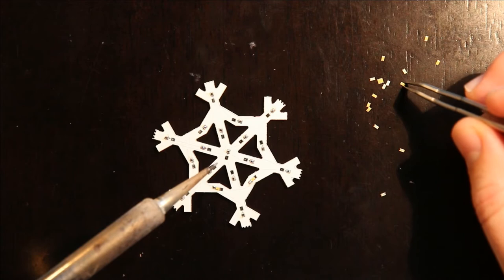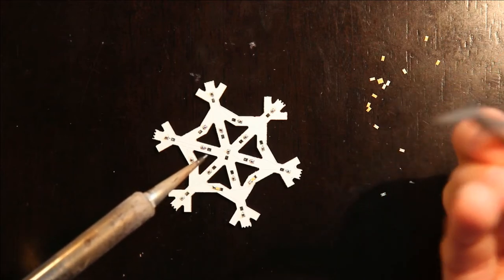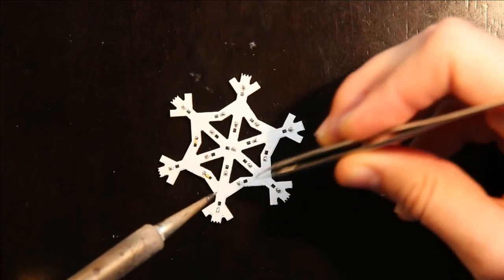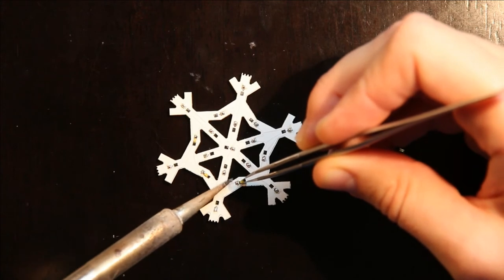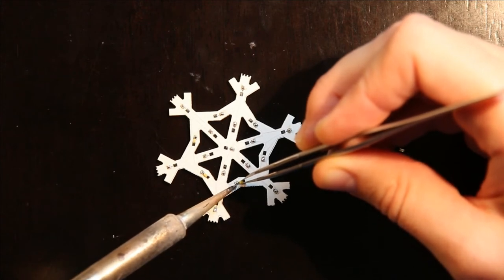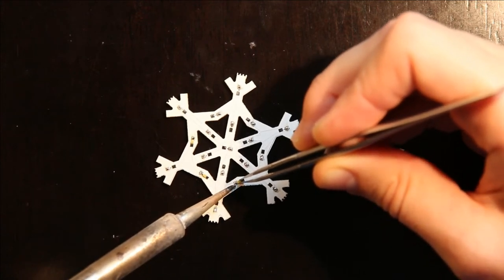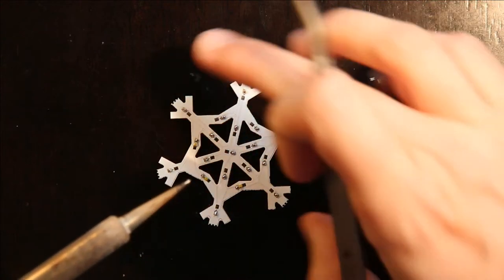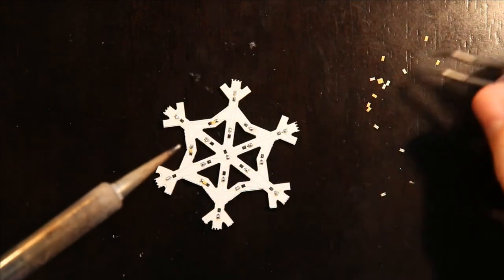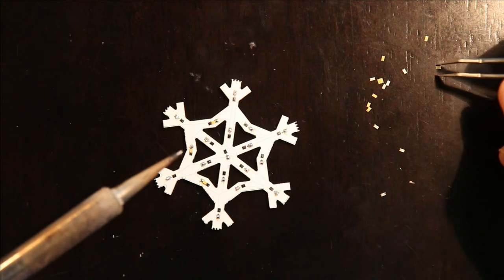If you do it the other way, the back side first, it will work. It's just the microcontroller sticks out of the board further than the resistors. So it's harder to solder the LEDs at that point.